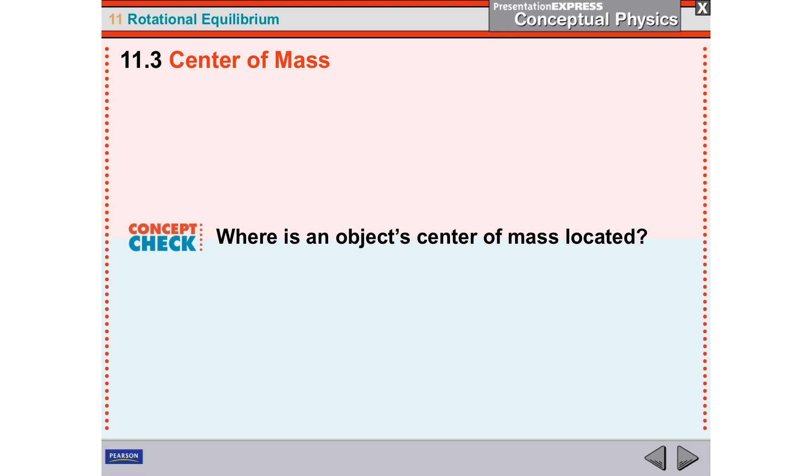So last question. Where is the object's center of mass located? It's located as though all of the weight in that object were concentrated at one point. So it's an average of where all the weight happens to be in three-dimensional space.